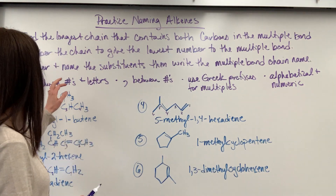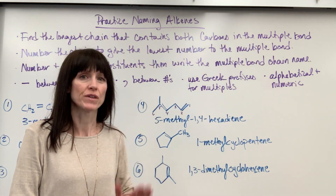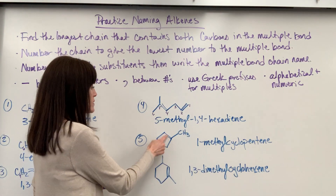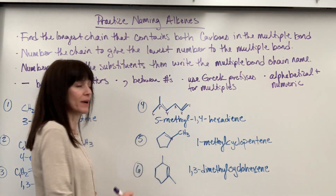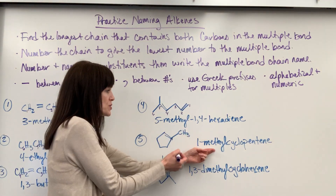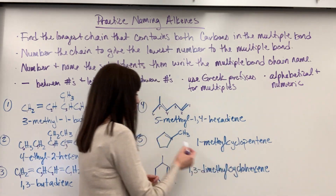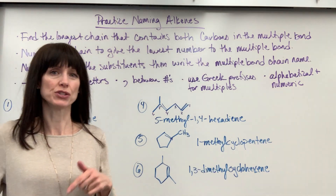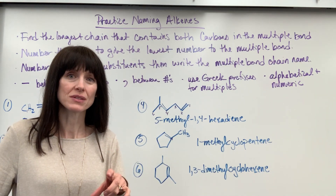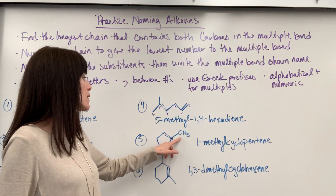Now let's look at some cyclic compounds. Remember, we always give the double bond the lowest number, so you start numbering where the double bond is. I have one, two, three, four, five carbons. I chose this carbon as number one because it also gives the smallest number to the methyl group. So we have 1-methyl as our substituent. It's cyclic, so we put the word 'cyclo,' and there are five carbons, so 'pent-,' with a double bond giving '-ene.' The name is 1-methylcyclopentene. Note: you don't need to specify 'cyclo-1-pentene' — it's understood that we always count from the first carbon in the double bond.